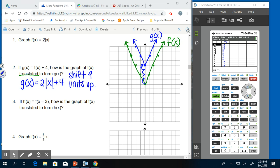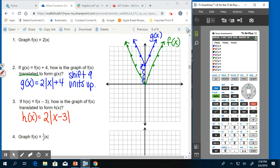Then it says, if h of x is equal to f of x minus 3, how is the graph of f of x translated to form h of x? So again, we're now going to replace the x in our original f of x equation with x minus 3. So we have h of x equals 2 absolute value x minus 3. We can pull that up in our calculator. y equals, clear what's there. 2, math, number, absolute value, and then x minus 3 inside the absolute value window. Exit the absolute value window, pull up the table.